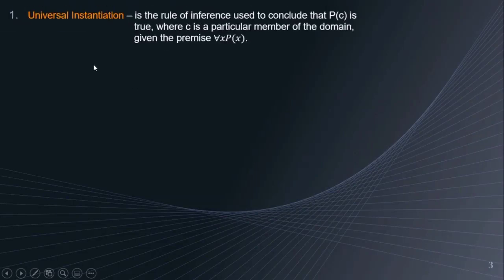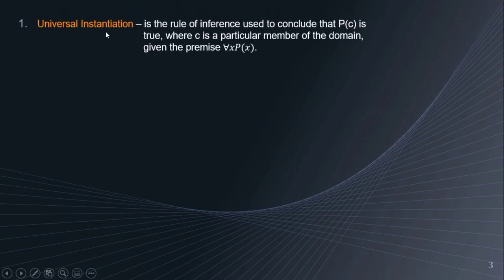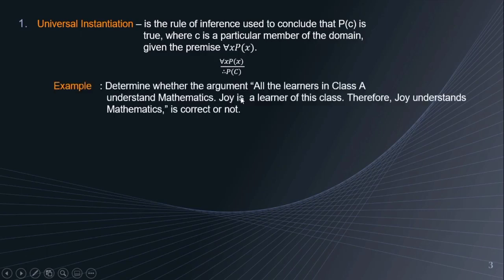First, let's talk about universal instantiation. When we say universal instantiation, it is the rule of inference used to conclude that P(c) is true, where c is a particular member of the domain, given the premise for all x, P(x). This is how it looks like: for all x, P(x) is true; therefore, P(c) has also to be true.